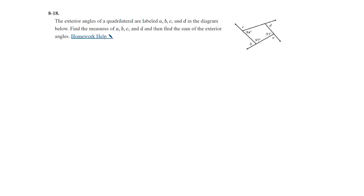Question 18: the exterior angles of a quadrilateral are labeled A, B, C, and D. Find the measures of A, B, C, and D, and then find the sum of the exterior angles. They create straight angles, so we take 180 minus 84, 180 minus 97, 180 minus 93. For the fourth interior angle of the quadrilateral, we know 180 + 180 = 360, so we can figure that out as well.